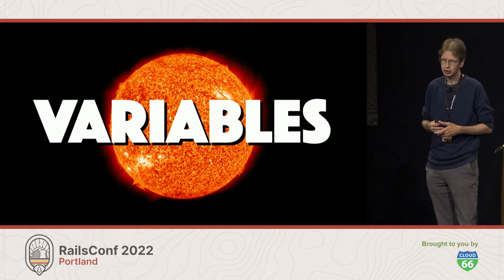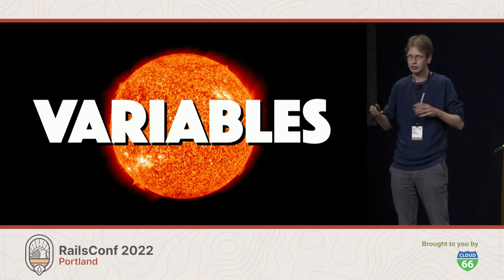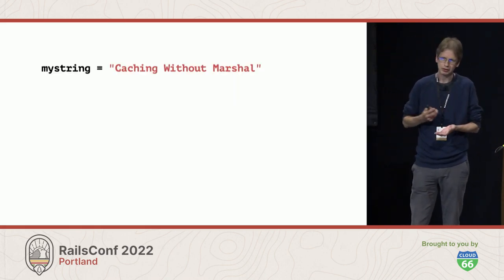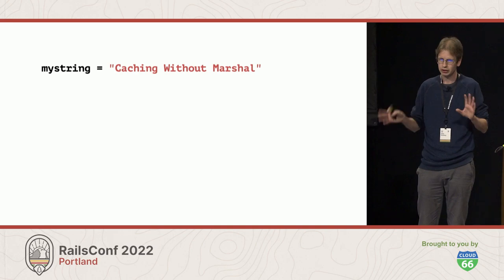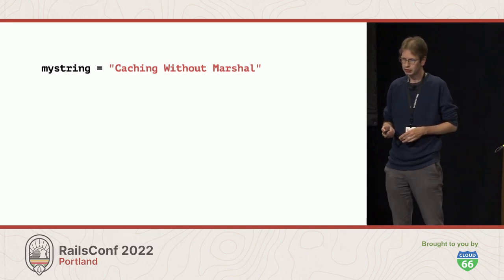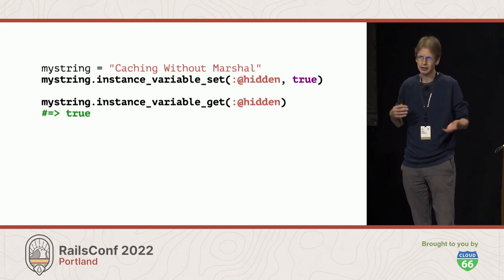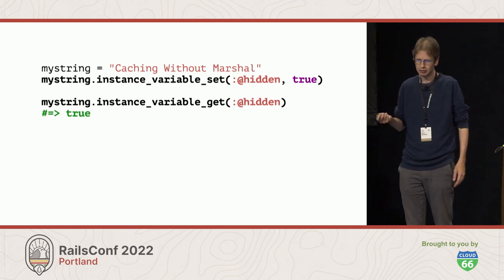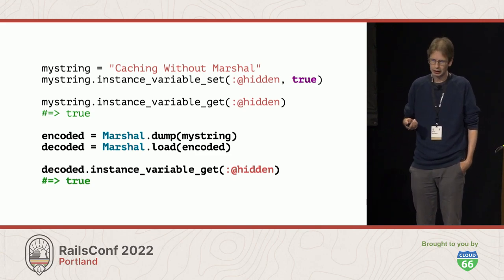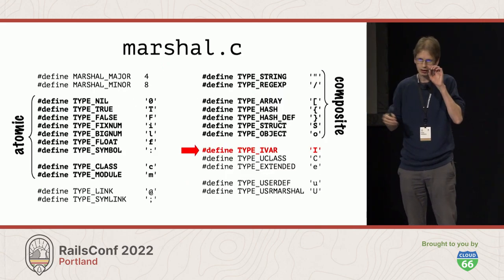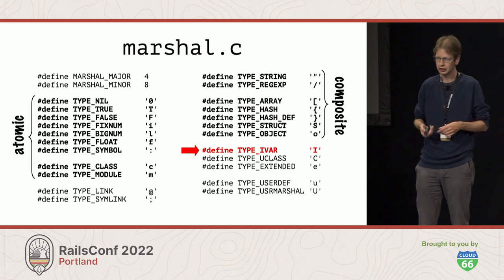Another important thing Marshall encodes is instance variables on non-object types — string, regex, hash, and array are kind of special objects. You can actually assign an instance variable to a string, and Marshall will correctly encode this using a special type called type_ivar. This is not documented anywhere as far as I can tell, but this is how it works — and it works for hashes, arrays, and regexes as well.